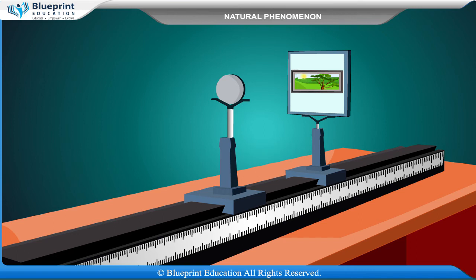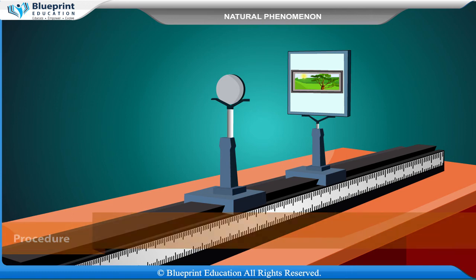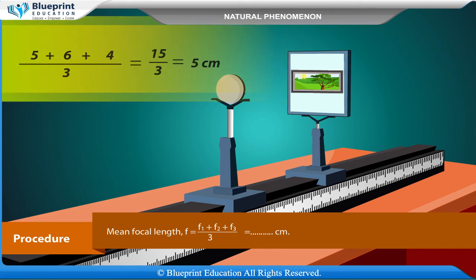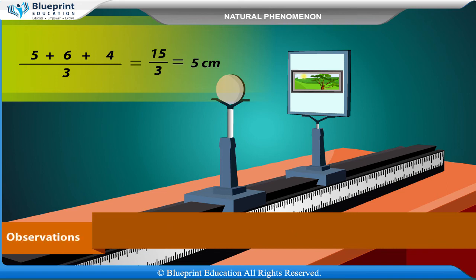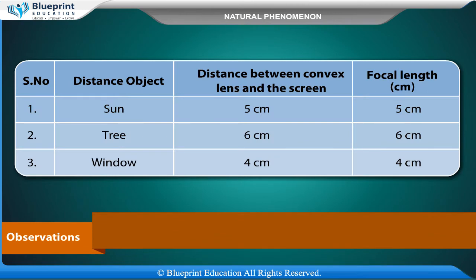Now calculate the mean focal length. The formula for mean focal length is: sum of the focal lengths divided by the total number of focal lengths calculated. Here we have calculated focal length three times, so we will divide the sum by three. The result is shown on the screen.